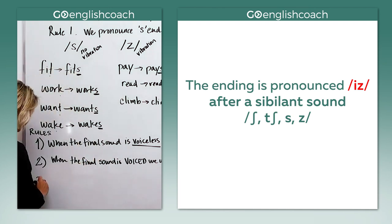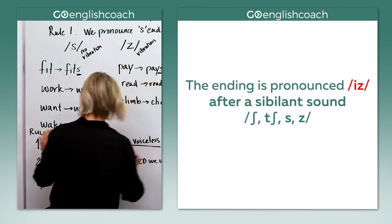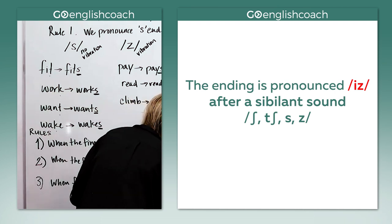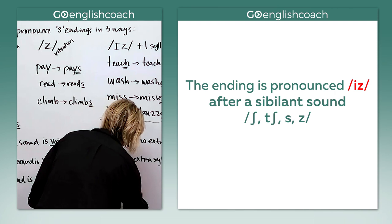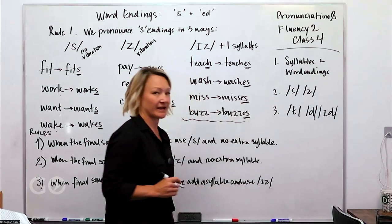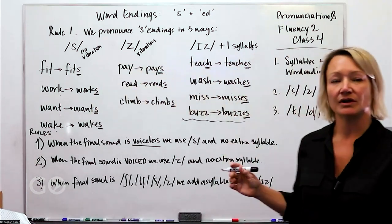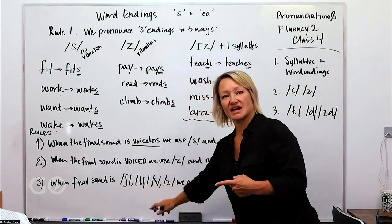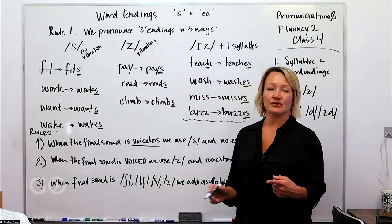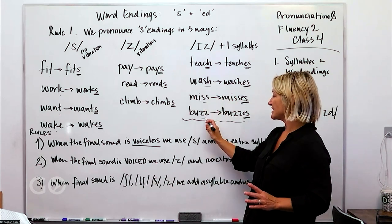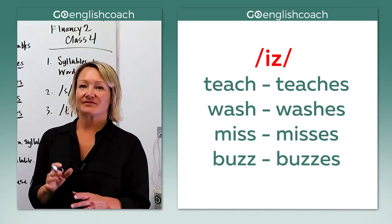And then the last one that refers to or talks about what happens here. When the final sound is, let's see, SH, CH, S or Z, we add a syllable and use the IS sound. So we're adding a syllable when we have those final, this is the SH sound, the CH sound, S and Z. Those sounds, when those are the final sounds, so CH, SH, SH, S or Z, we use the IS sound.